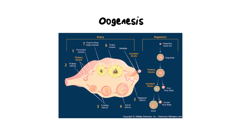Hi everybody and welcome back. Today we are going to be looking at oogenesis, which is a type of gametogenesis and it's the way in which we produce egg cells. In this video I'm going to be covering the physical structures needed for oogenesis, specifically focusing on the ovary. I'm not going to be doing the entire menstrual cycle — that will be in a separate video. Today we're just introducing the structures, how they form, what they become, and how we eventually make an egg cell.